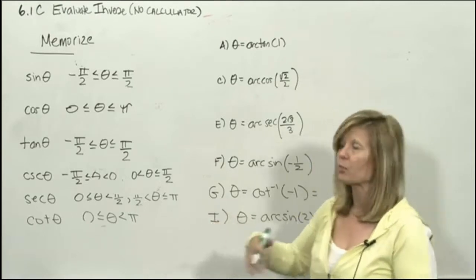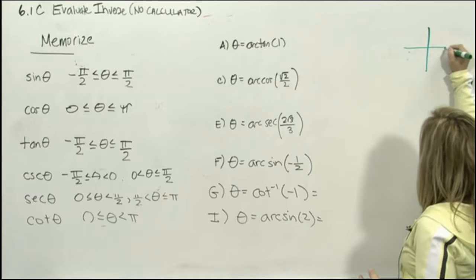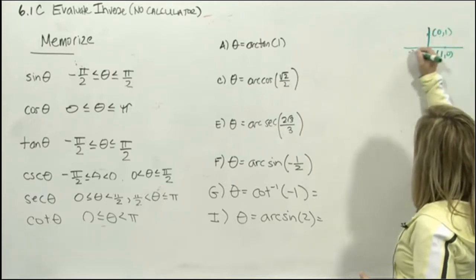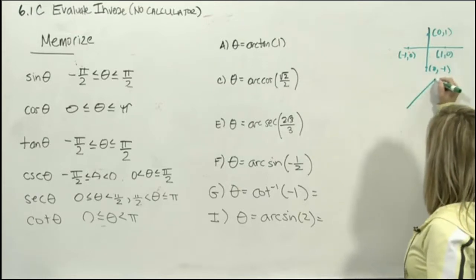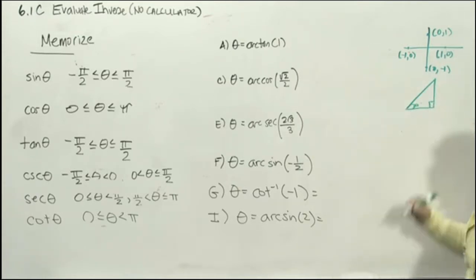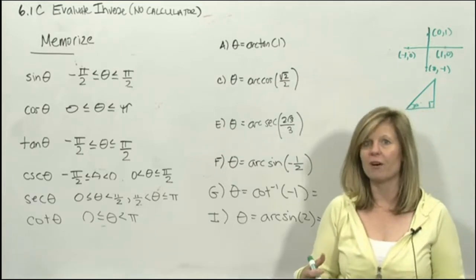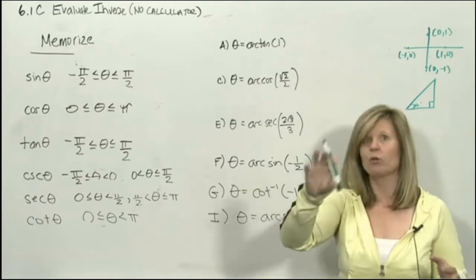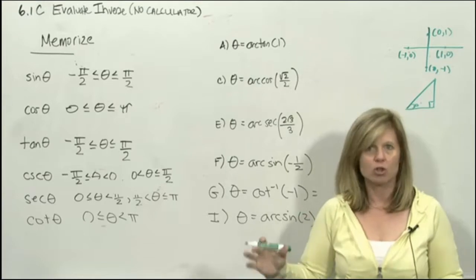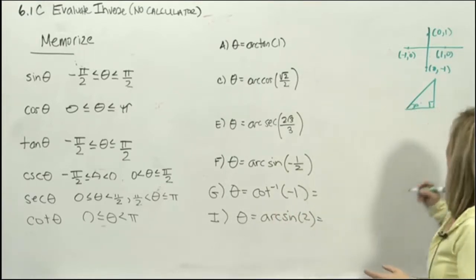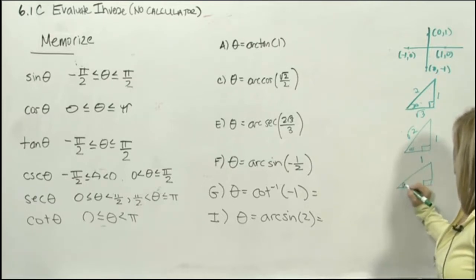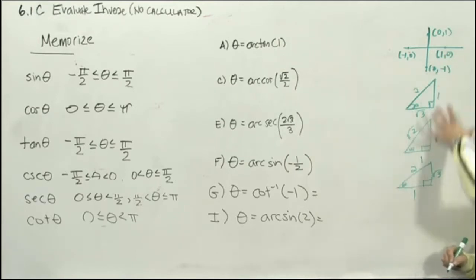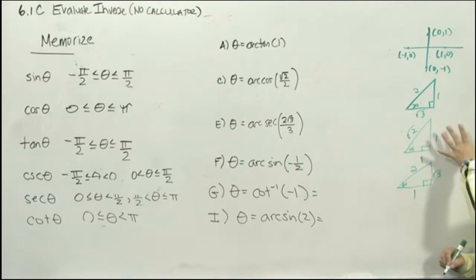If we're not allowed to use a calculator, we have to rely on our references we've been studying all semester. I'm going to put up my unit circle and draw my special right triangles — this has to be memorized for the final exam. On your final exam packet there's a sheet that says draw your unit circle, draw your 30-60-90 and 45-45-90 triangles. Here's my 30, here's my 45, here's my 60. This information is memorized.